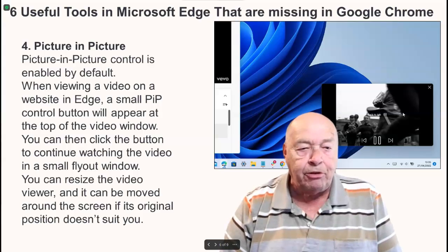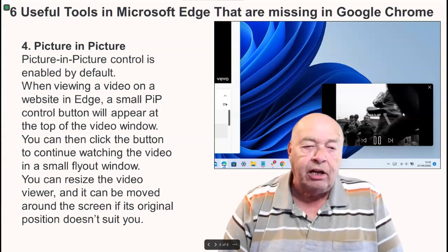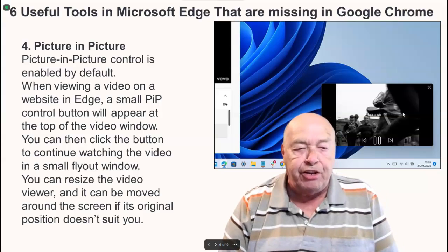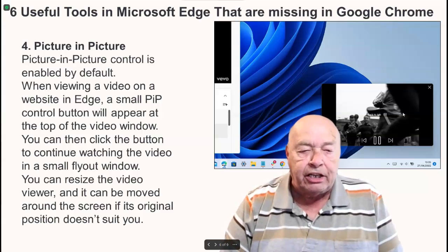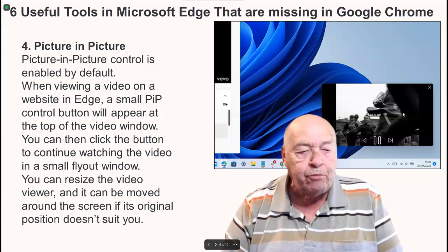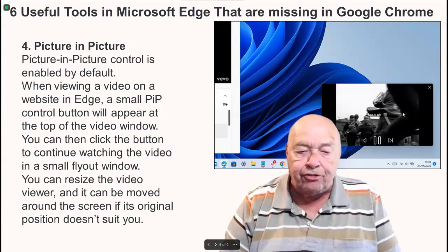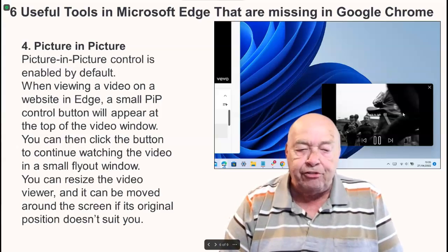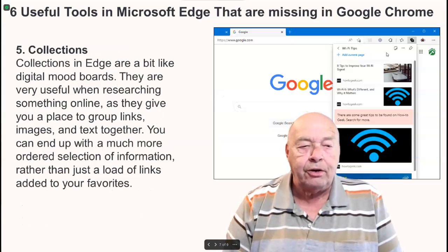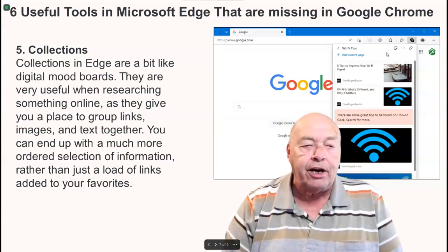Number four: picture in picture. Picture-in-picture control is enabled by default when viewing a video on a website in Edge. A small PiP control button will appear at the top of the video window. You can then click the button to continue watching the video in a small fly-out window. You can resize the video viewer and it can be moved around the screen if its original position doesn't suit you.